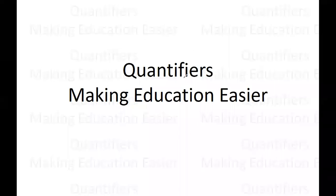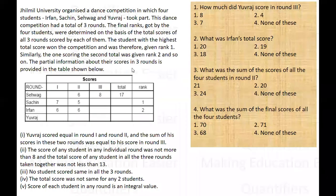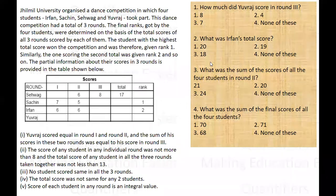Hello everyone. This is our set of the day. There is a university which organized a dance competition in which four students — Irfan, Sachin, Sehwag, and Yuraj — took part. This competition has three rounds and the final ranks are the sum total of the scores in the three rounds. The student with the highest total score is given rank one, the second highest gets rank two, and so on. Some partial information is given regarding scores in the three rounds, along with ranks and total scores.